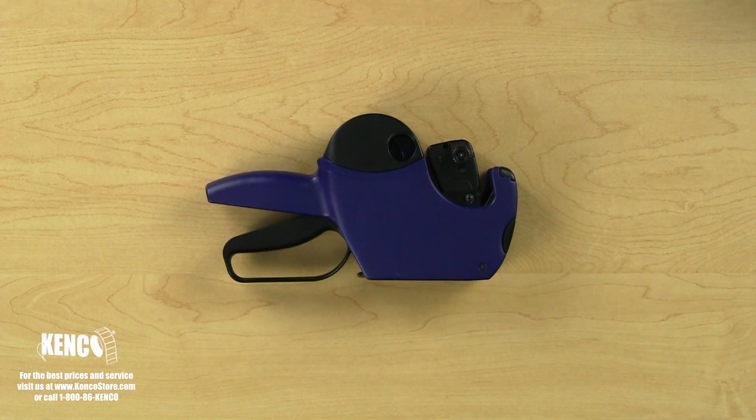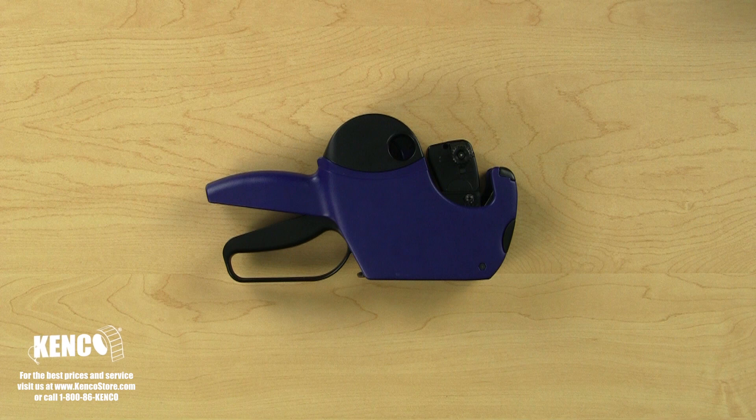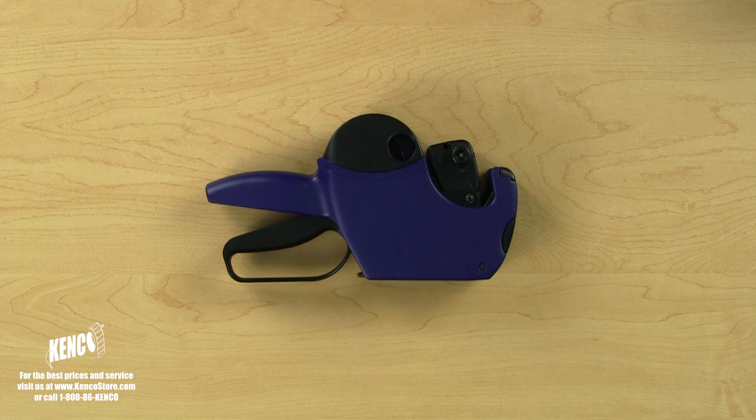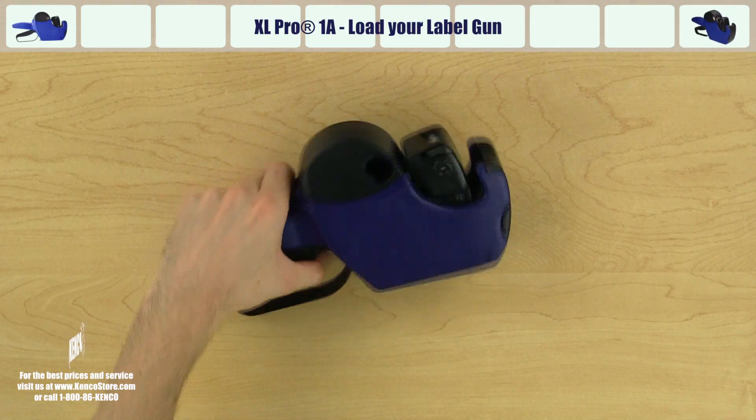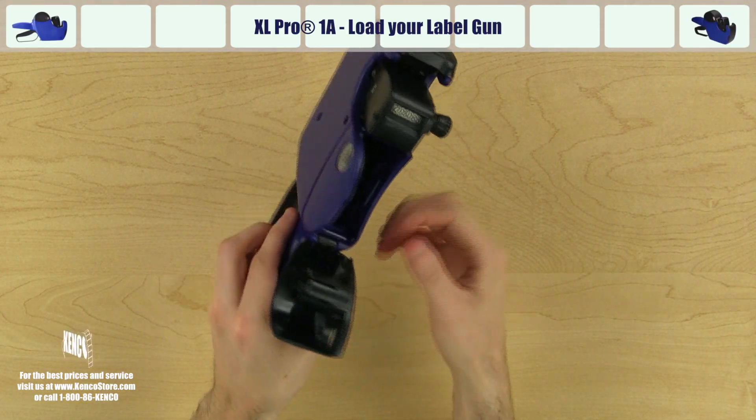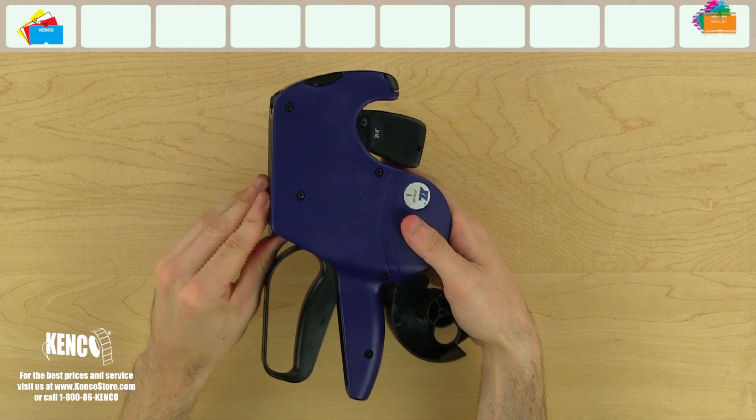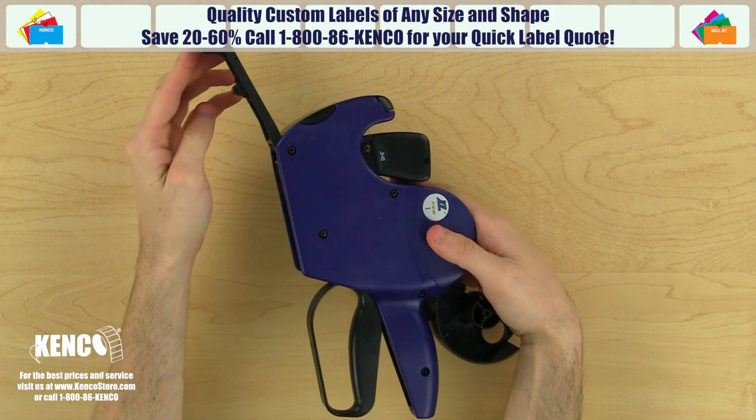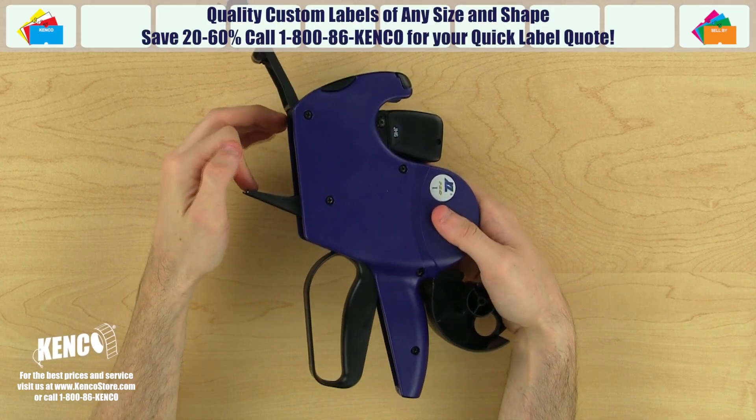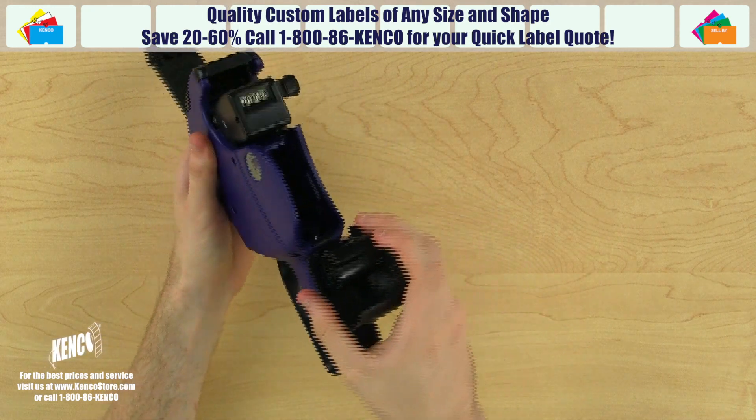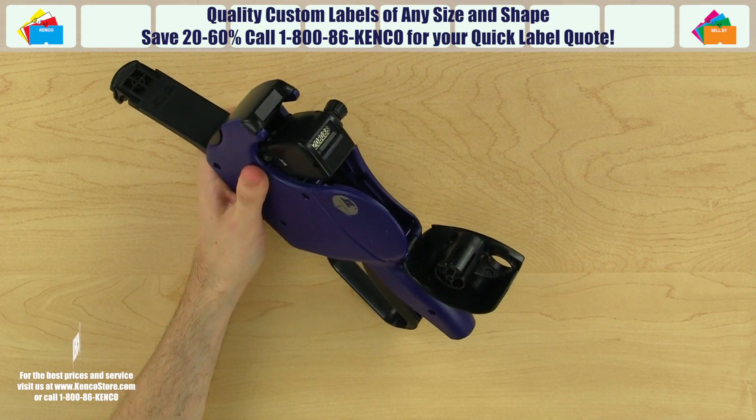Now that we are more familiar with the various components, let's learn how to quickly and properly load the XL Pro 1A series labeler. Let's start by opening up the label housing cover. Next, flip the gun over and open the bottom cover by lifting up on the latch below. Pull up the pressure plate to its fully open position. Failing to do this step will result in the labels going through the wrong path.